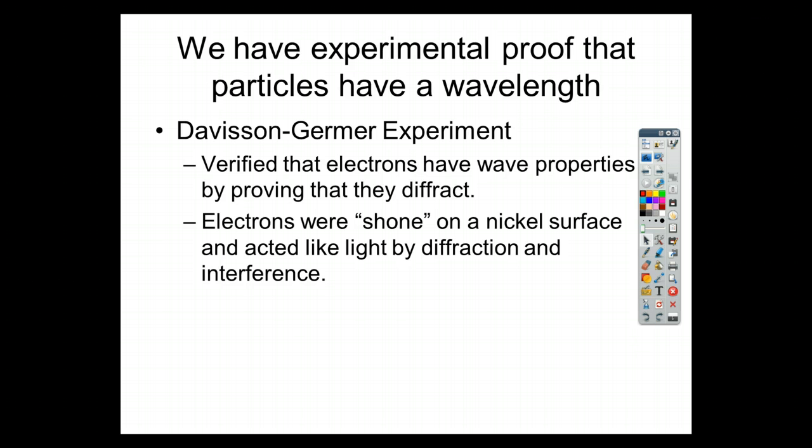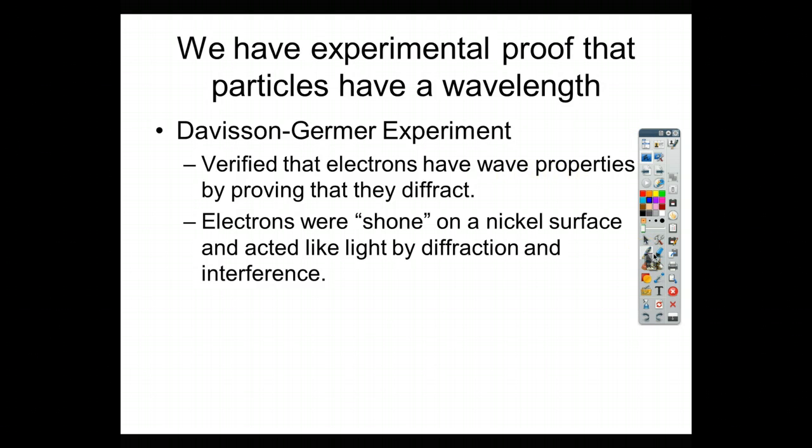We can confirm this through an experiment called the Davison-Germer experiment. They've verified that electrons, as we were just talking about, do have wave properties because they diffract. If you remember in the diffraction experiments that we've done before, you have a slide, and in that slide, you've got all these little lines that are very close to each other.